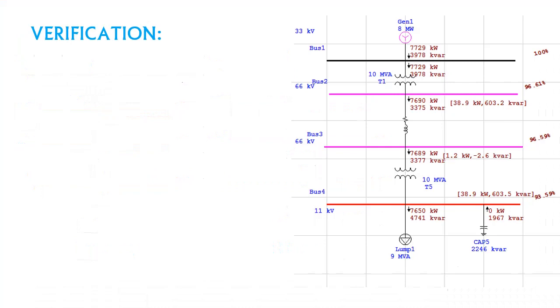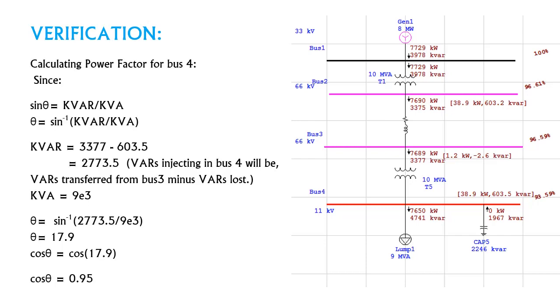Now this is the most interesting part, whether what we calculated is actually working or not. So again calculating the power factor, whether the power factor has increased to 0.95 or not. So using the same formula and again calculating the kVARs in the same manner. And now again calculating the theta and taking the sine inverse and again taking the cosine of the theta and we get 0.95.